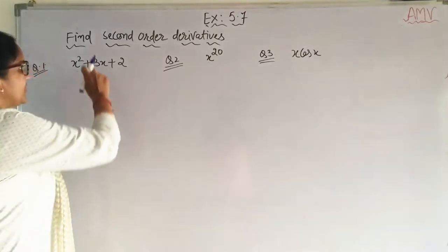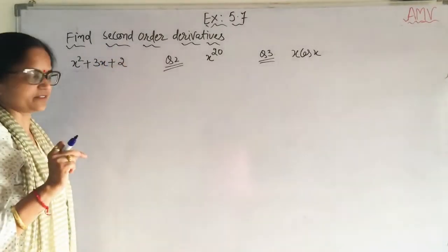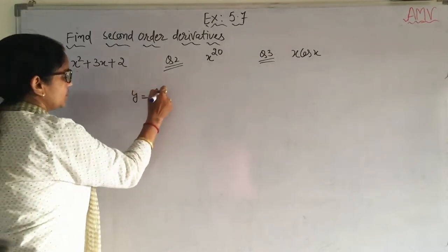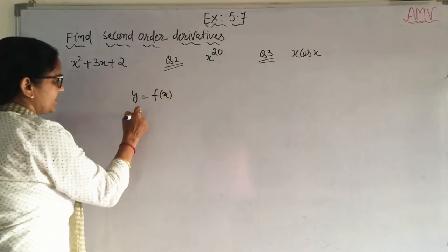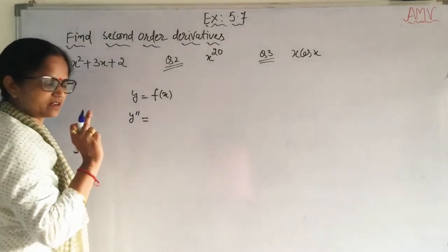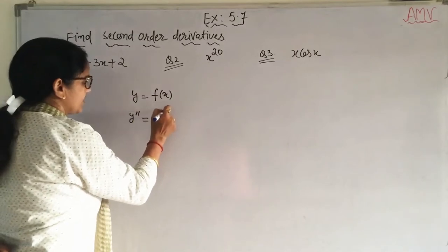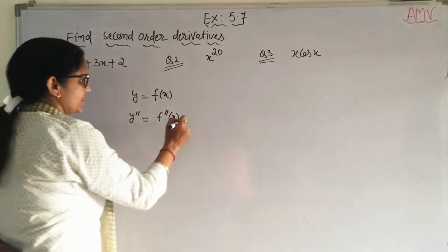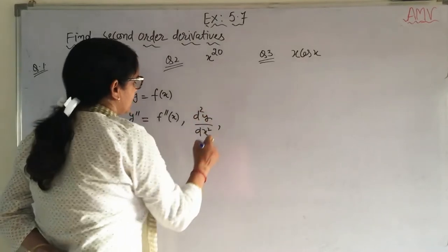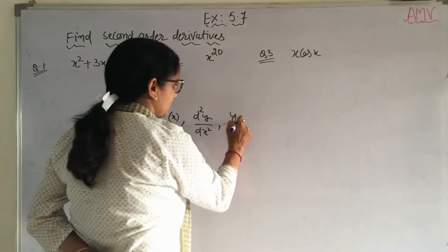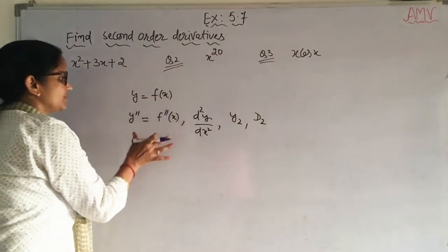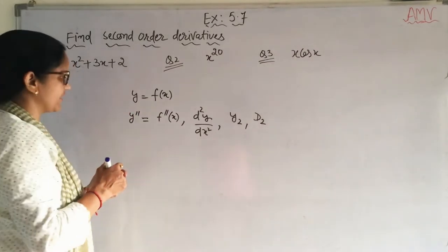Now students, find second order derivatives. For the second order derivatives, if y is equal to f(x), then y double dash represents the second order derivative. Or we can write f double dash of x, or d²y/dx², or y₂ and d₂ also. These are simple notations to represent the second order derivative.